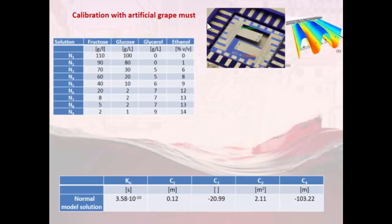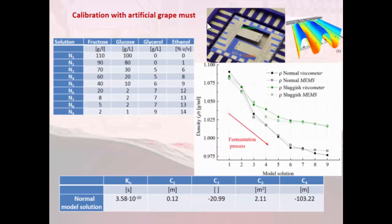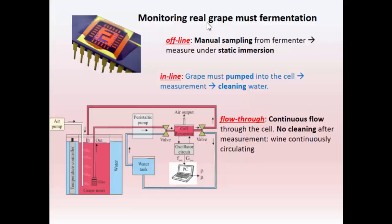For the calibration, we use an artificial grape must because grape must is expensive so we use a mix of glycerin and water. With these nine liquids we perform the calibration and end up with the values for the constants. This is the comparison between the densities and viscosities for density only with a normal and sluggish fermentation and comparing with the viscometer from the lab and our MEMS sensor. So once the system is calibrated then we go to the application and for the final application we have three implementations.